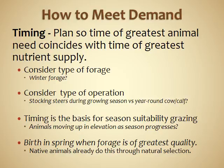Timing is the basis for season suitability grazing, which sometimes involves moving animals up in elevation as the season progresses — this is very common with sheep. It's also important to birth in the spring when forage is of greatest quality. Native animals already do this from an evolutionary standpoint — they are able to birth their young when forage is green and lush with a lot of energy, because if they gave birth during winter when forage is scarce, they're not likely to survive.